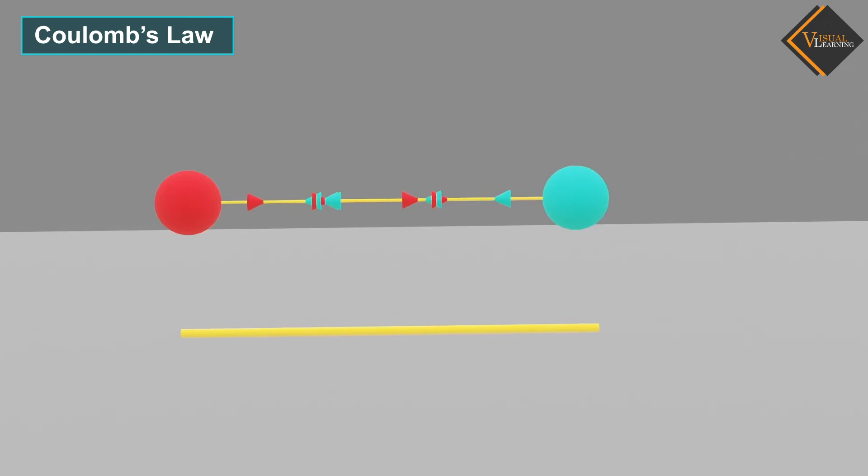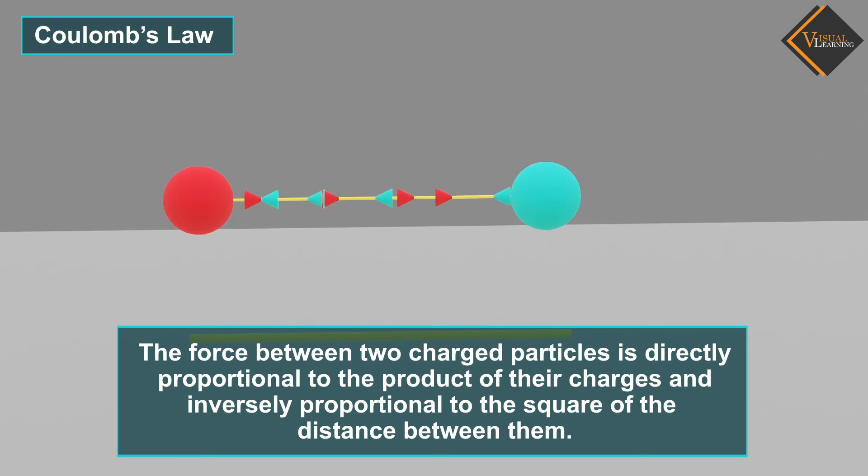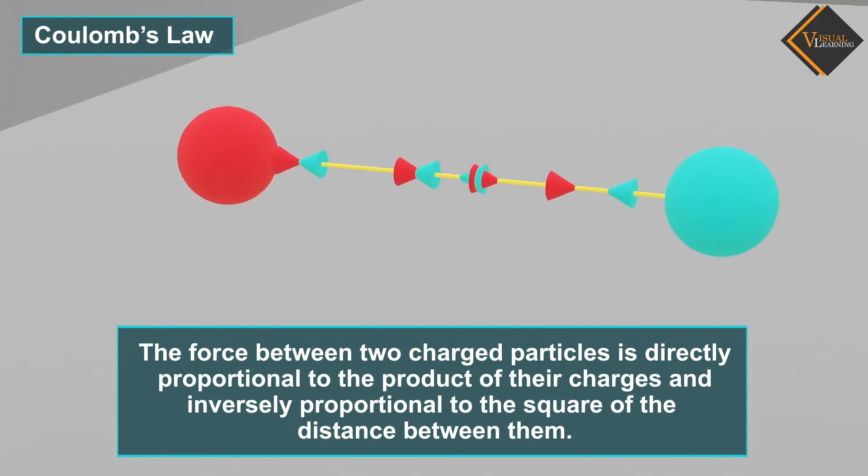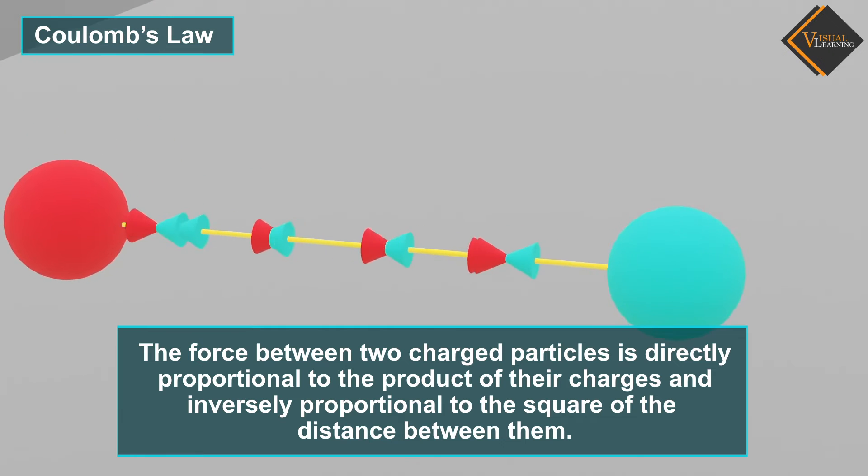Coulomb's Law can be defined as follows: The force between two charged particles is directly proportional to the product of their charges and inversely proportional to the square of the distance between them.